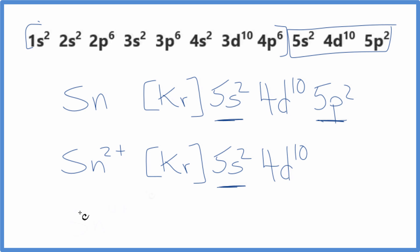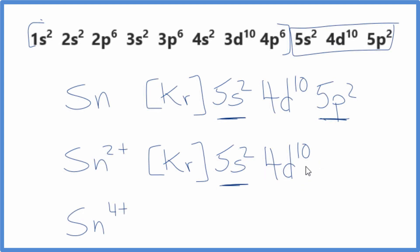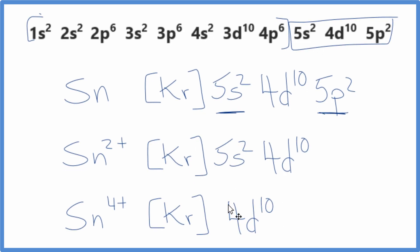For Tin 4+, we're not going to lose from the D here. We're going to lose from the S. Remember, we said the S and the P are the valence electrons, so we're going to lose these electrons right here. Then we'll have this for Sn 4+. This is the electron configuration for Sn 4+.